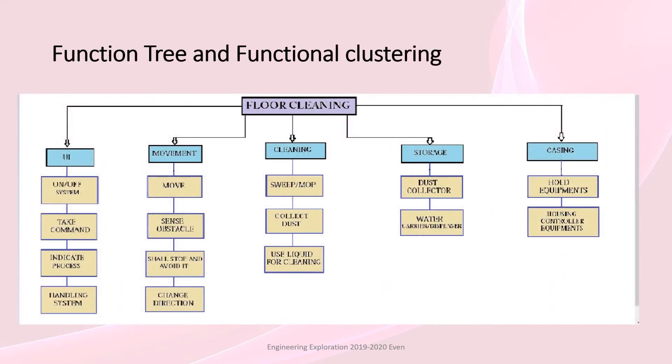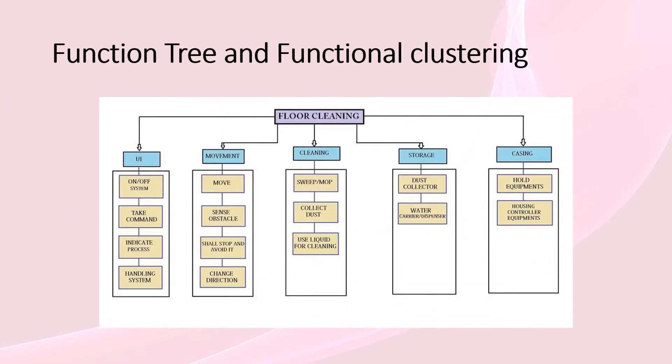Function tree and functional clustering. Function tree has 5 main functions: UI, Movement, Cleaning, Storage and Casing. In functional clustering, in UI, we have on-off system, take command, indicate process, handling system.